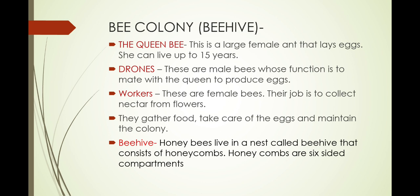In bee colonies, the bee queen is the big boss of the colony. There is one queen bee in a hive that lays about 1,200 eggs per day. Drones are the male bees whose function is to mate with the queen. Male bees are called drones.